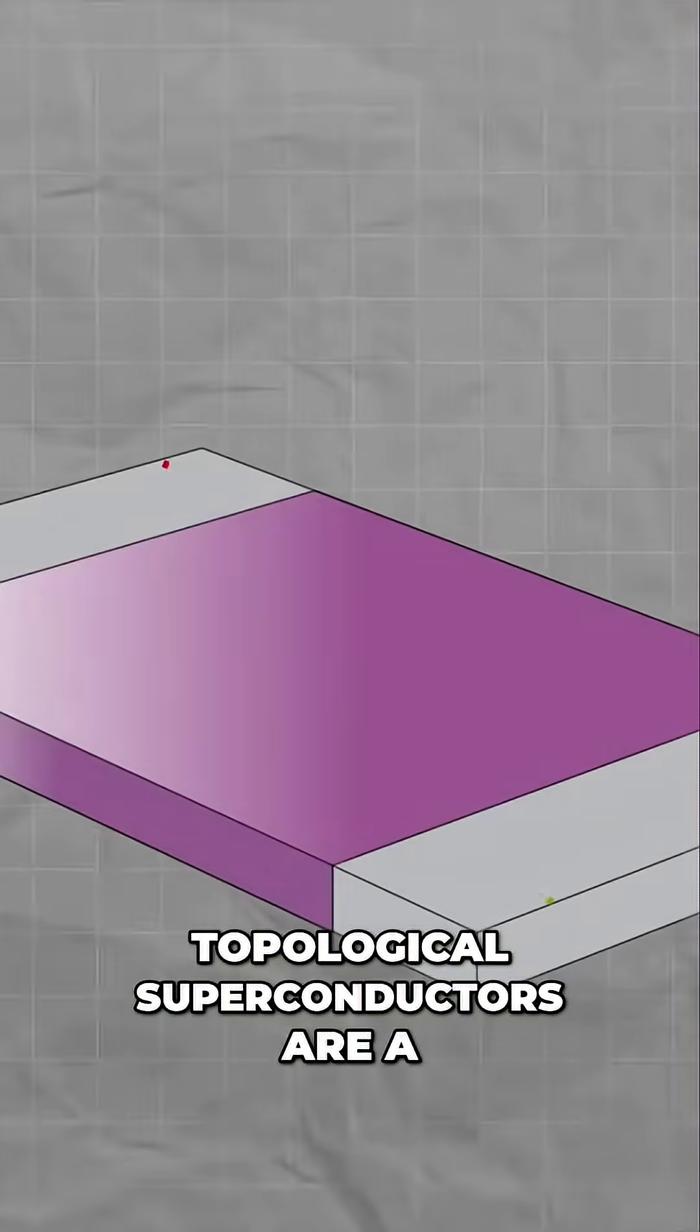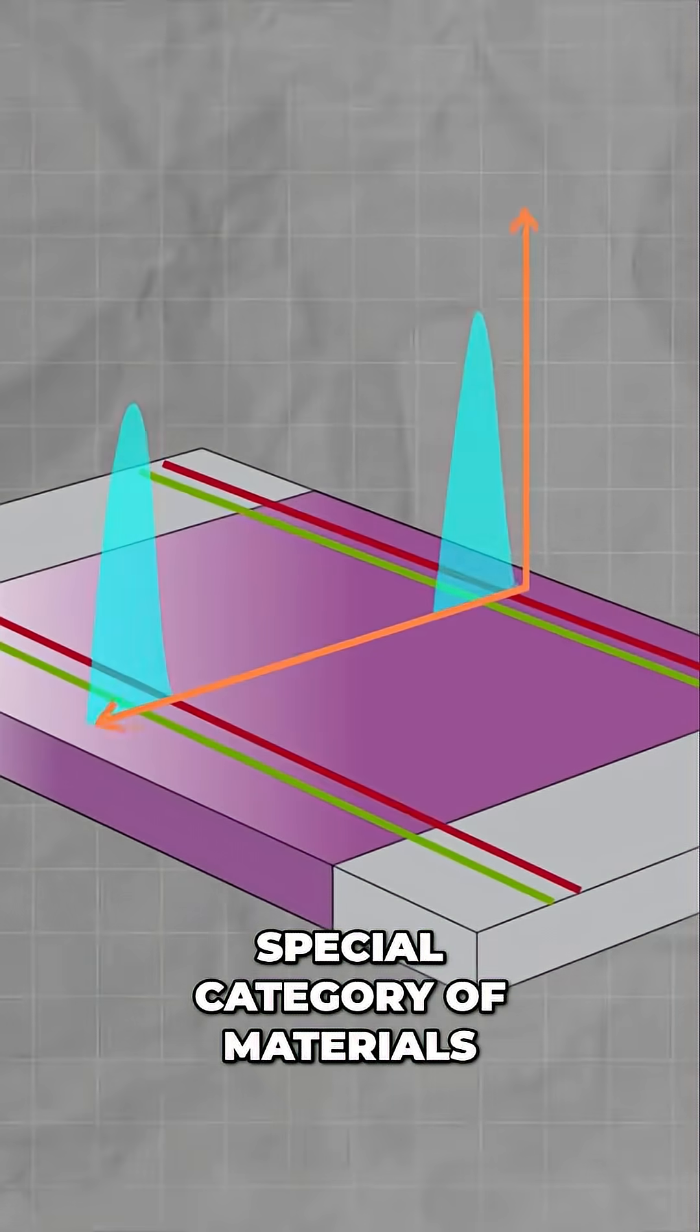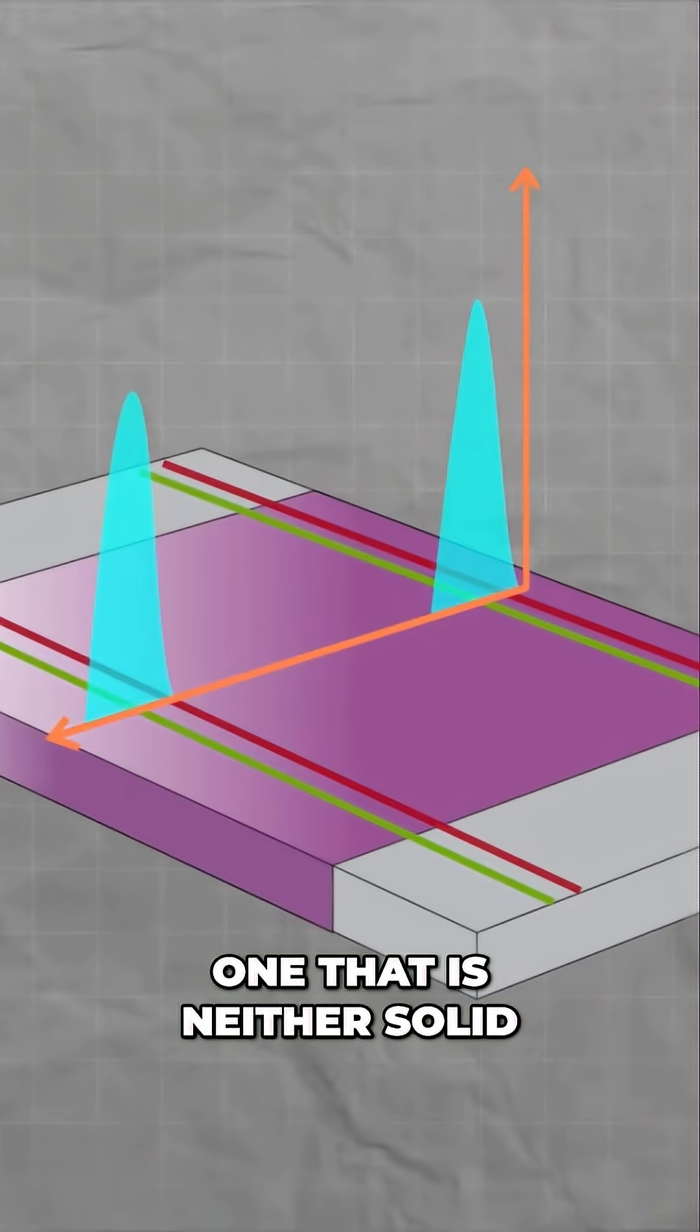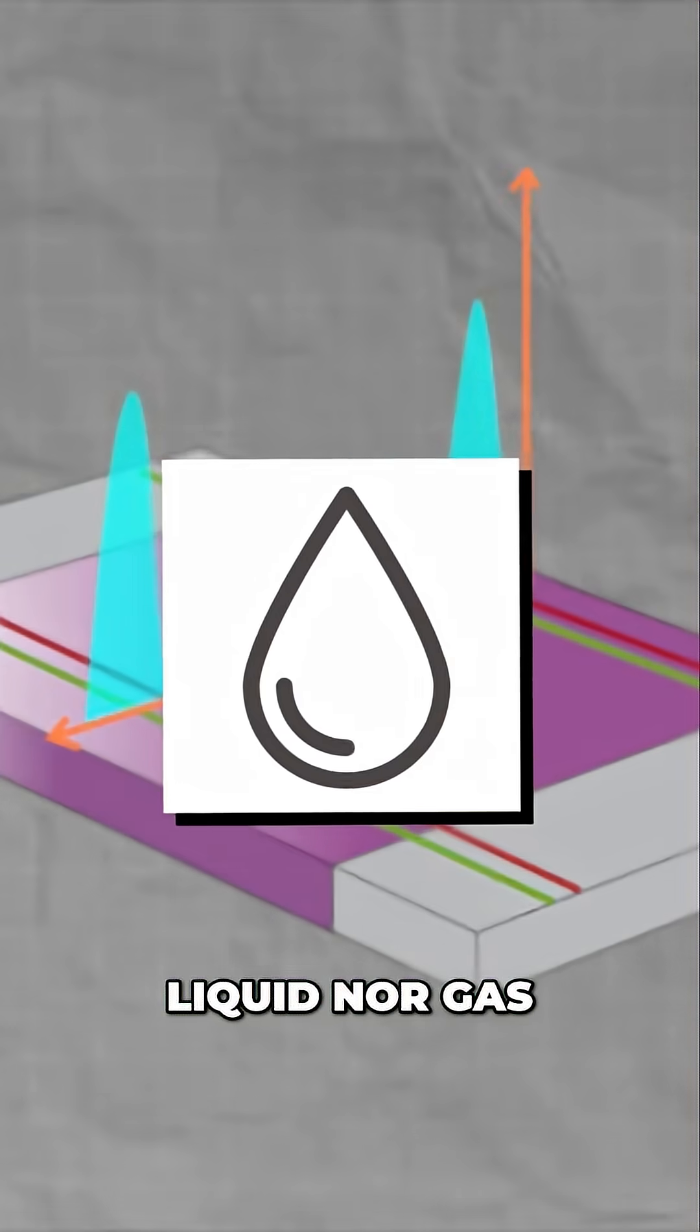Topological superconductors are a special category of materials that give rise to an entirely new state of matter, one that is neither solid, liquid, nor gas.